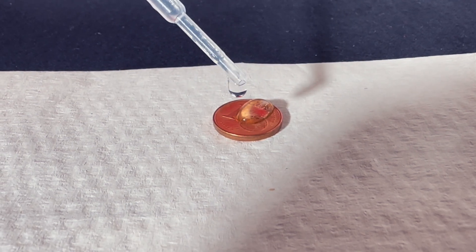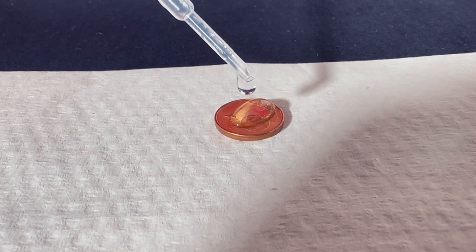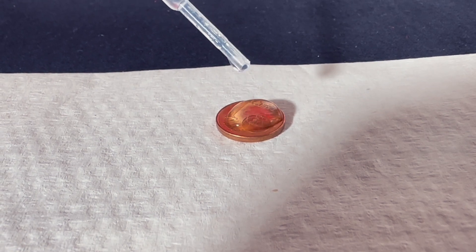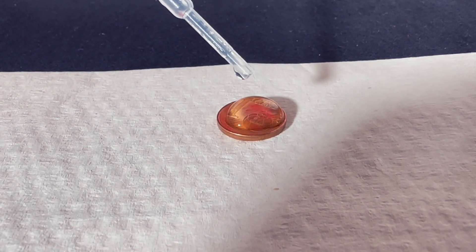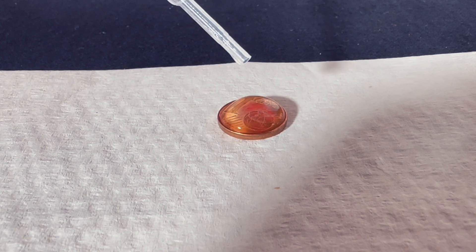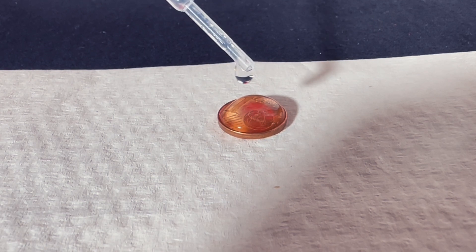The edge of the coin also forms an edge for the large drop. The large drop continues to grow upward and remains laterally limited by the edge of the coin.